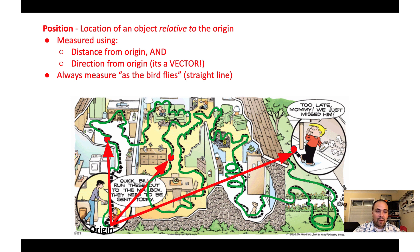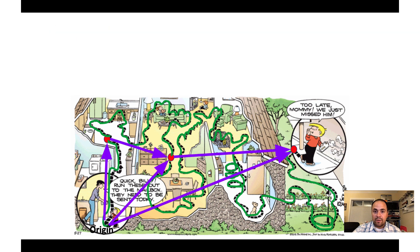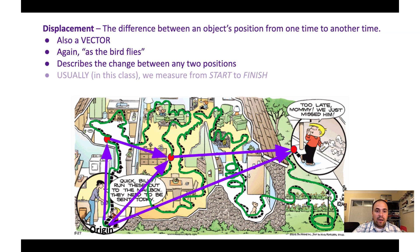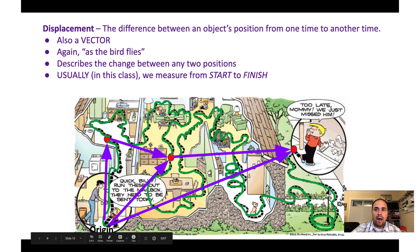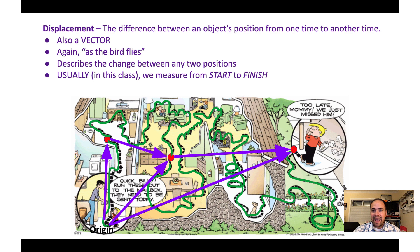Displacement is a little tricky because it's very closely related to position. Displacement is the difference between an object's position from one time to another. If I look at one position and then another, the displacement is represented by the purple arrow between those two positions. Typically, we look at total displacement from the start point to the end point. Billy's total displacement is shown by the large purple arrow going from the origin in the kitchen or living room all the way to the mailbox — as the crow flies. Displacement is starting position to ending position as the crow flies, which is very different from distance.